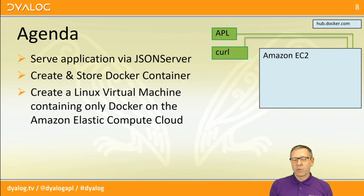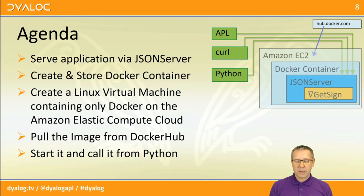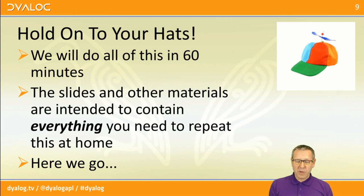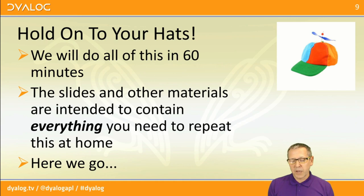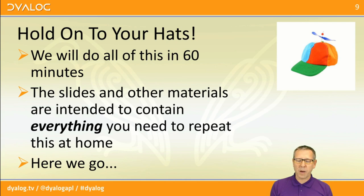We're then going to pull it down to another machine so we can have this thing running on all sorts of different machines easily. The last thing we're going to do is create a Linux virtual machine out on Amazon in their Elastic Compute Cloud, create an empty Linux virtual machine there containing only the Docker tool, pull the image back down from Docker Hub, start it, and then as a final test we're going to see whether we can make a call to it from Python just to demonstrate how easy it is.